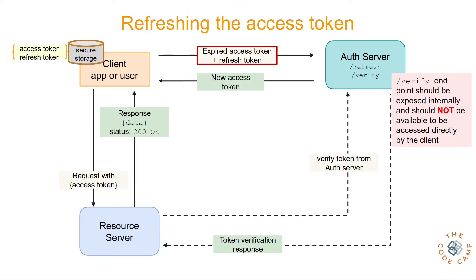Now consider a scenario where the refresh token is leaked. A hacker would be able to generate an access token using the leaked refresh token, so we need a mechanism to invalidate refresh tokens from the server. To handle this, refresh tokens are also stored in a refresh token store — which can be a database table — and this store is referenced whenever someone tries to refresh the access token. If the store has no entry for that refresh token, it is considered invalid. In case of a leakage, the administrator can remove the leaked token from the store, making it invalid.